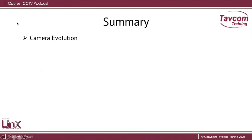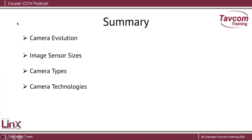So we talked about the camera evolution. We talked about the image sensors and their sizes. We also talked about the different camera types — box cameras, bullet cameras, static domes, PTZ domes, etc. And then we talked about the camera technologies: HD TVI, CVI, AHD, HD SDI, IP, and standard definition. This brings us to the end of this podcast. I hope you found it useful. Thank you and goodbye.